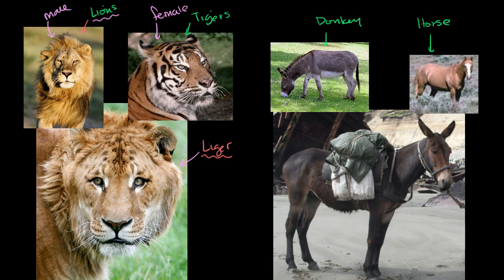Now you might ask: what if we went the other way around — a female lioness and a male tiger? In that case you would produce something called a tiglon. That is a different hybrid with slightly different properties than a liger, so I encourage you to look up what a tiglon is.